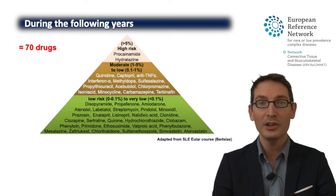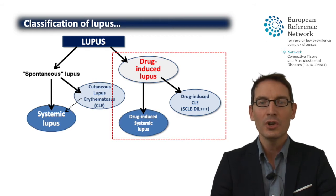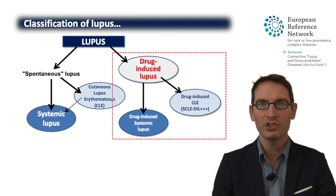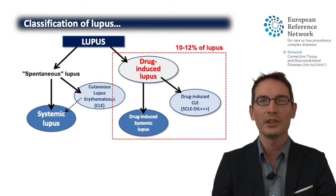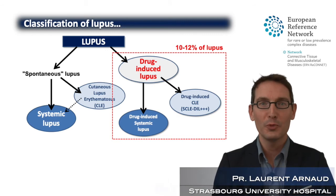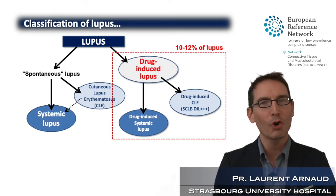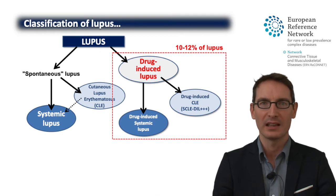Since these early times, more than 70 drugs have been reported and associated with systemic lupus, creating a new subset and classification: drug-induced lupus, which can be limited to the skin or exist as a systemic form. The epidemiology is not well known, but it is said to be up to 10–12% of all lupus cases, though for systemic lupus it's probably less.